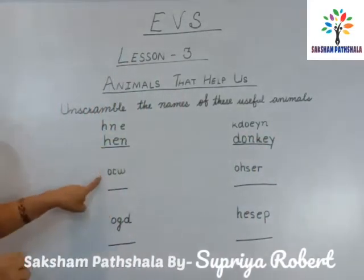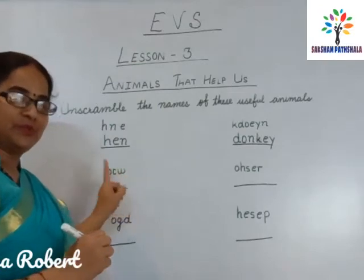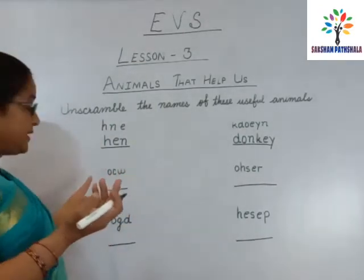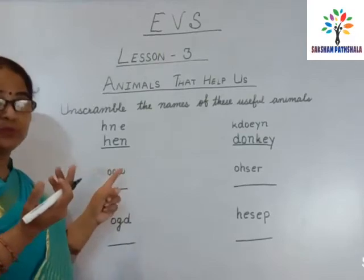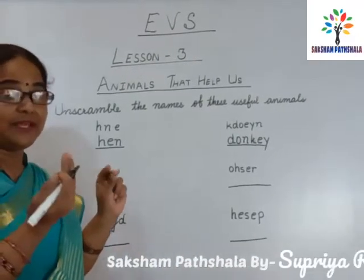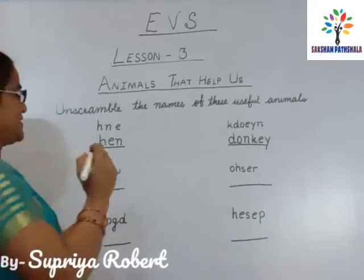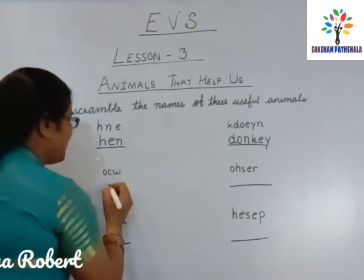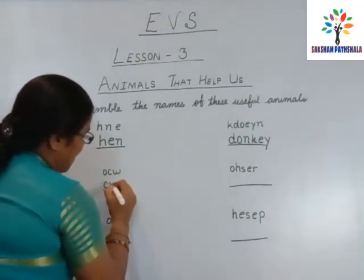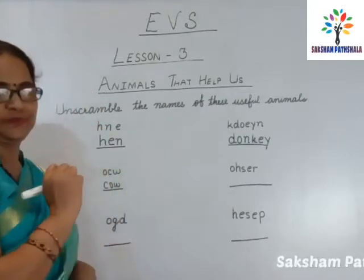Now here — O, C, W. What is written here? H, O, W, C, O, W. Cow. Good.